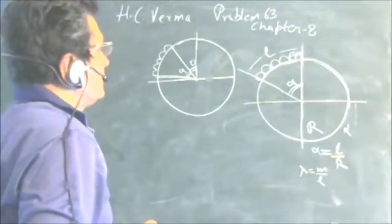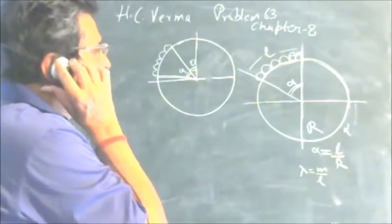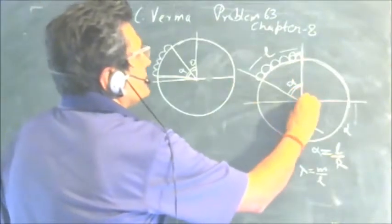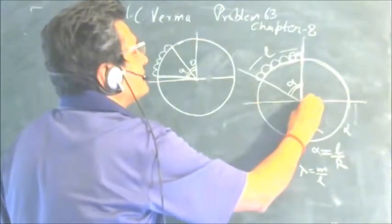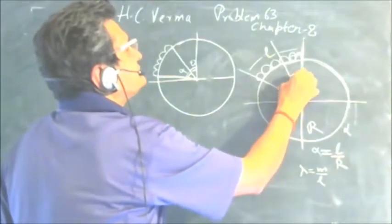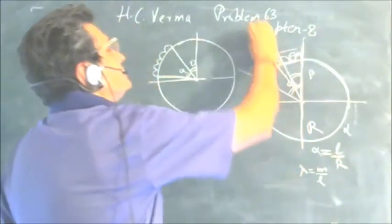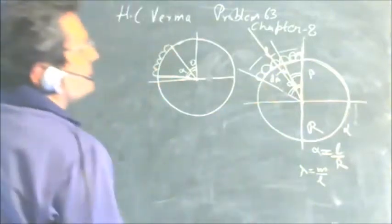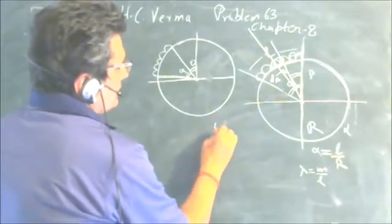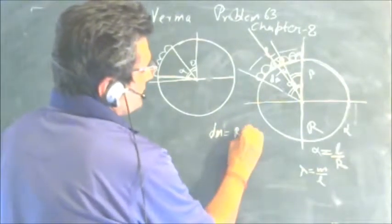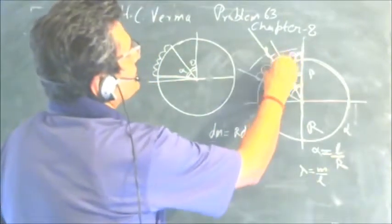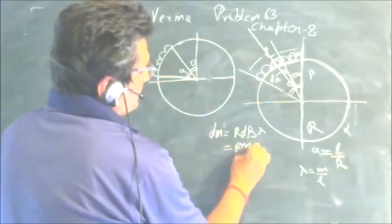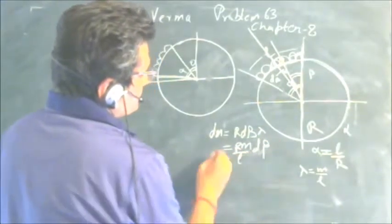What will be the velocity and also the acceleration when the chain is at this point? In such problems we should always take a small element. Take this as the reference point; from here take an angle beta, and a small angle d-beta. What is the mass of this part of the chain? dm = R·dβ·λ, because R·dβ is the small arc. So dm = (RM/L)·dβ.